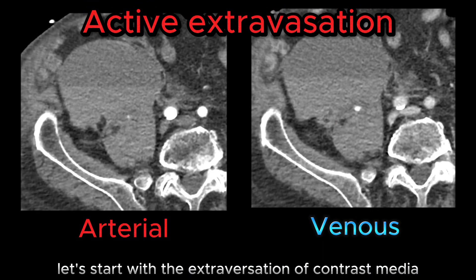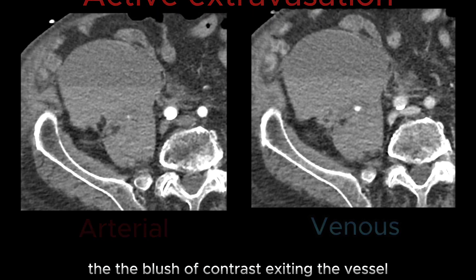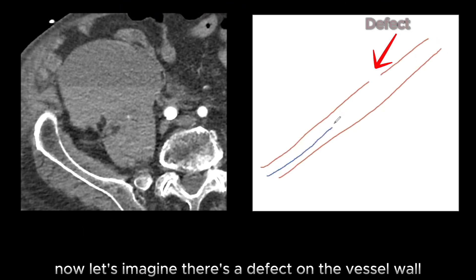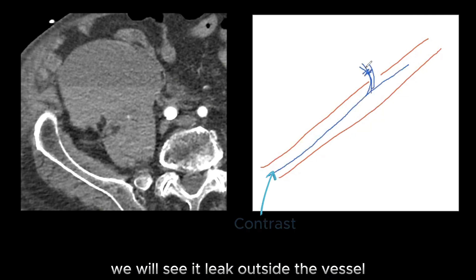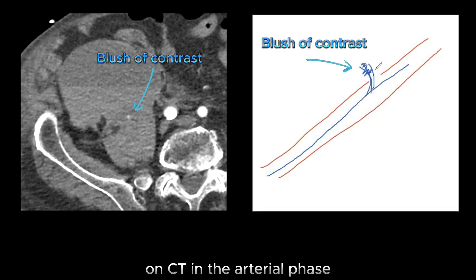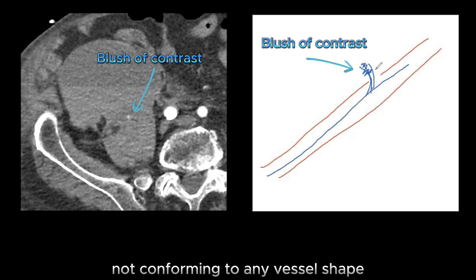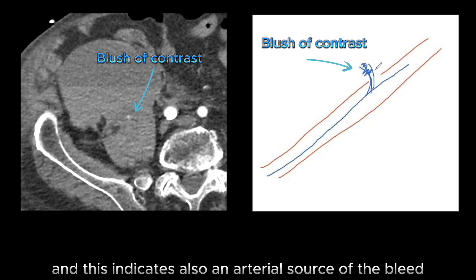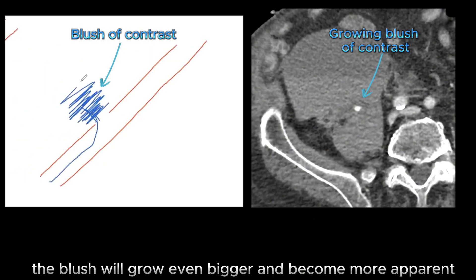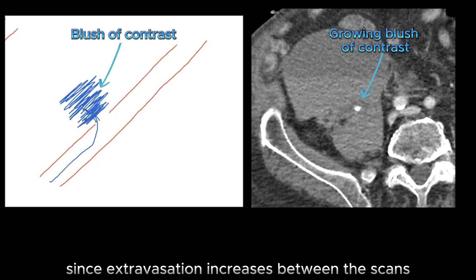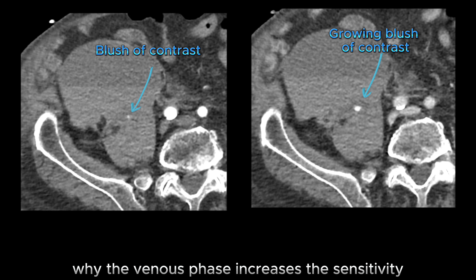Let's start with the extravasation of contrast media. This is a direct visualization of the blush of contrast exiting the vessel. If there is a defect on the vessel wall, as we administer contrast we will see it leak outside the vessel. On CT in the arterial phase, the extravasation will appear as a blush of contrast not conforming to any vessel shape, indicating an arterial source of bleed. On the venous phase, the blush will grow even bigger and become more apparent since extravasation increases between the scans, which explains why the venous phase increases the sensitivity.